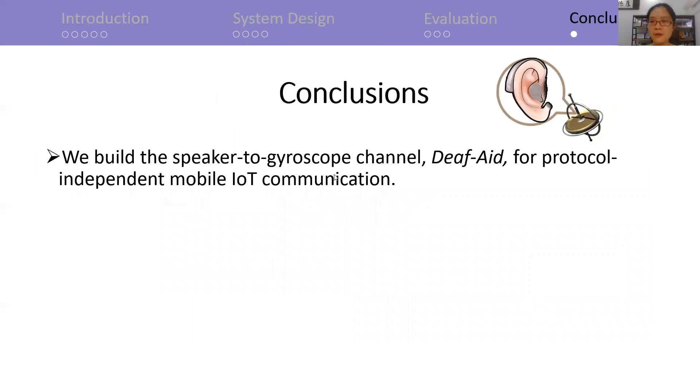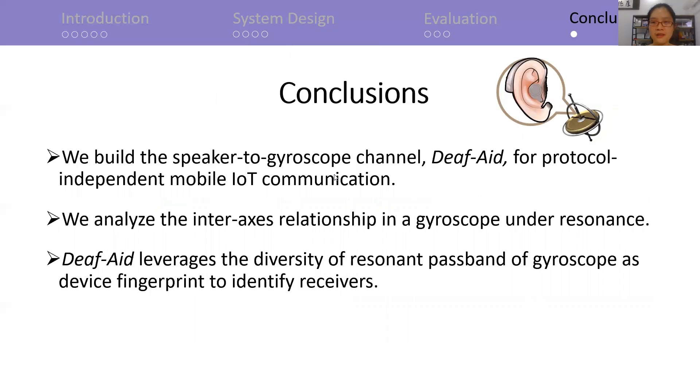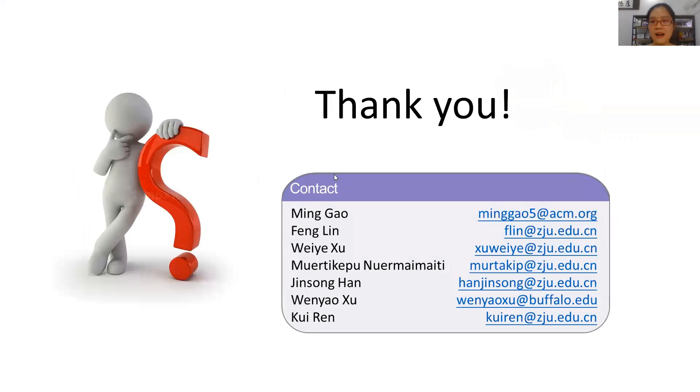In summary, we build a protocol-independent and robust channel for the mobile IoT network, analyze the gyroscope's inter-axis relationship, and propose a novel device fingerprint. Thank you, and if you have any questions, feel free to contact us.